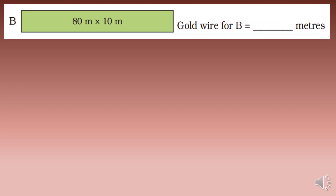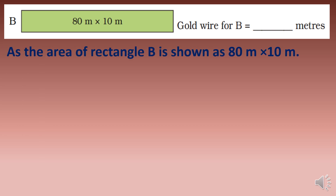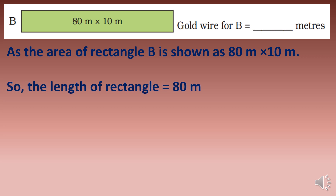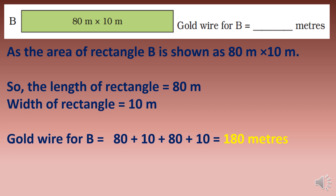Rectangle B is 80 meters by 10 meters, with an area of 800 square meters. The boundary is 2 times (80 plus 10) equals 180 meters of gold wire.